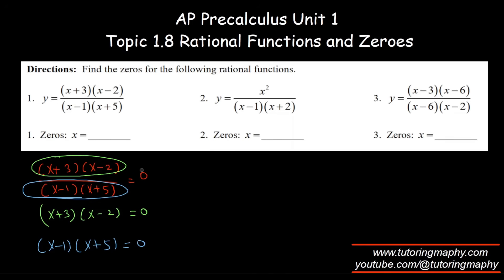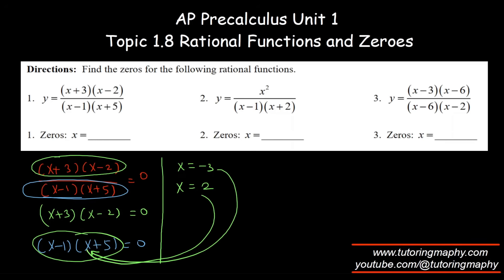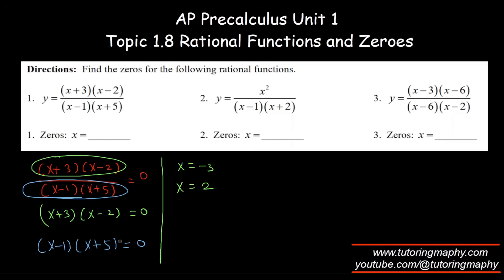From the numerator, x plus three times x minus two equals zero, which gives x equals negative three and x equals two. Now, does negative three make the denominator zero? No. Does two make the denominator zero? No. So both are allowed. The answers are negative three and two.